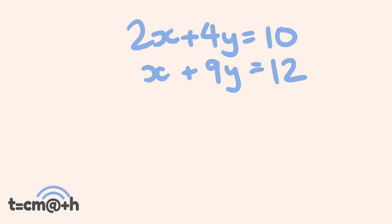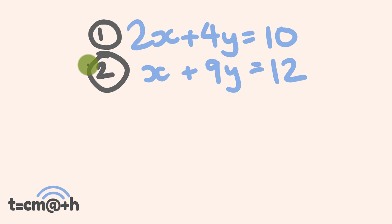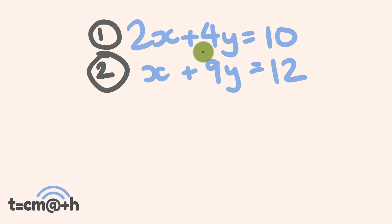So the way that you solve this particular set of equations — first off I would go through and give these equations each a name. This one here is going to be equation 1 and this is equation 2. This helps a bit later on when you're trying to identify what's happening to each equation as we go along. The trick to doing these equations by the elimination method is you have to adjust the entire equations so that the coefficients in front of one of the variables will match.